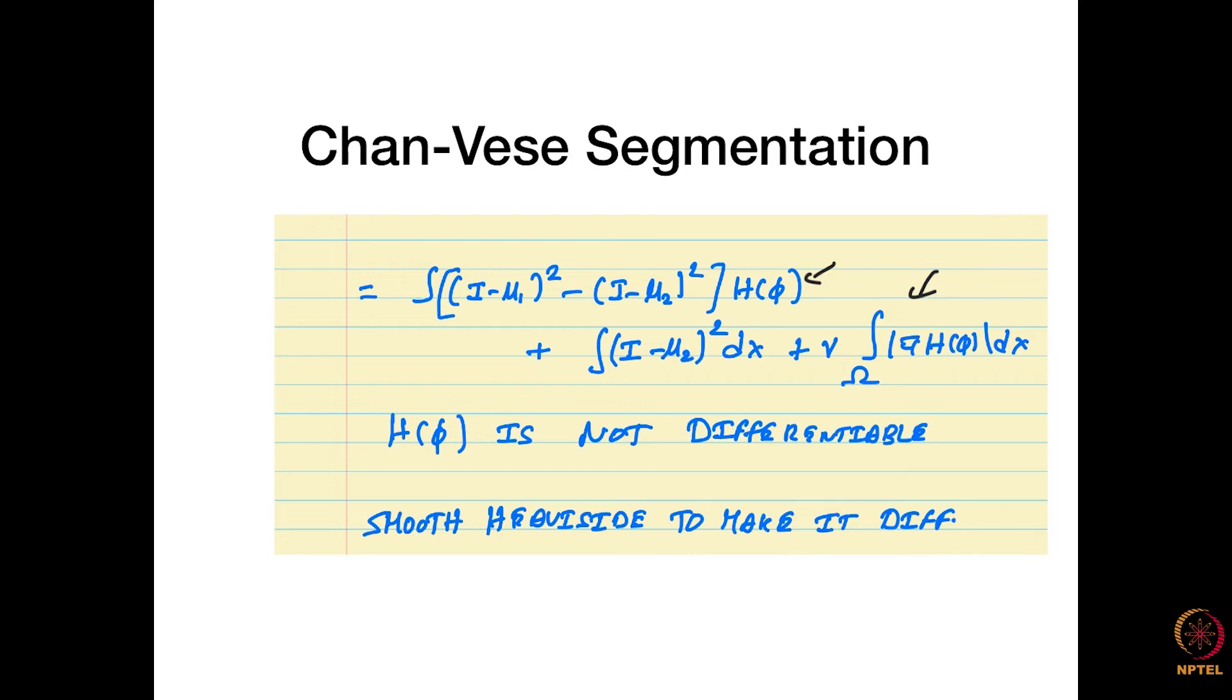But then H of phi is not a differentiable function because everything greater than 0 it is 1, and everything less than 0 it is 0. At this point there is a discontinuity, so it is not a differentiable function. Typically, you would have a smooth approximation to this. In the previous video, we saw the smooth approximation to the delta function. Similarly, you can have something for H.